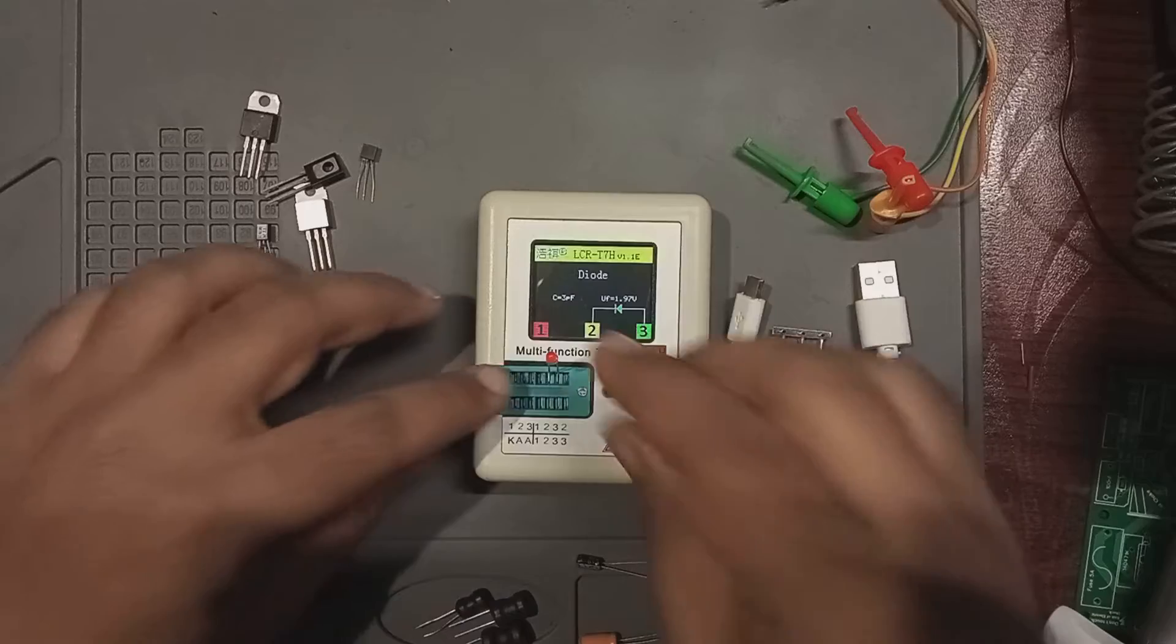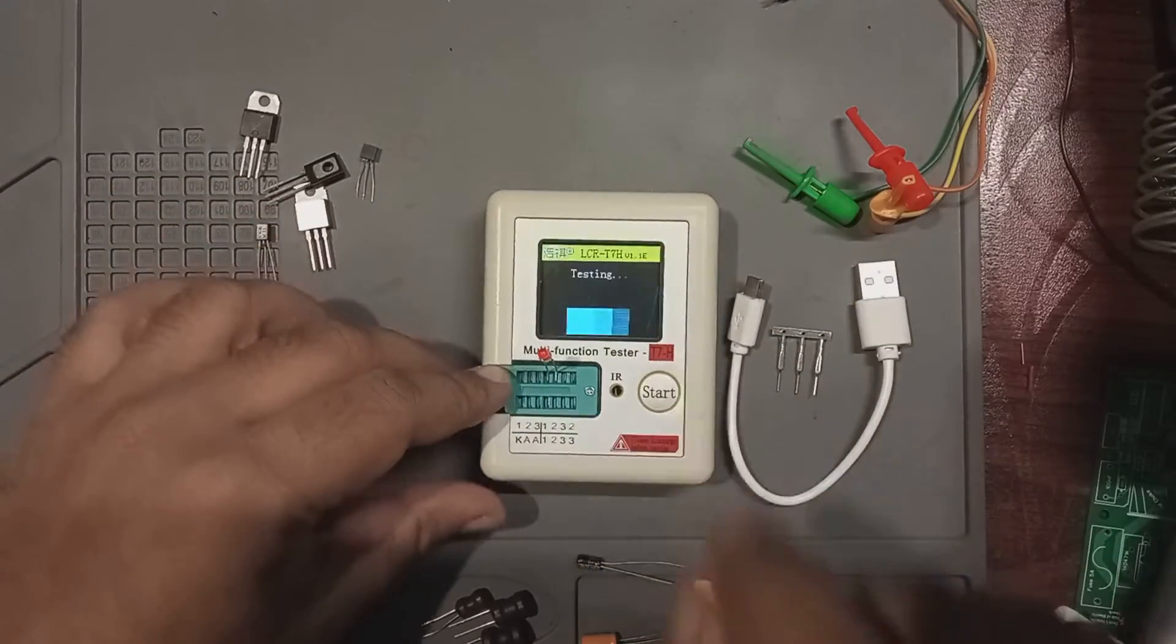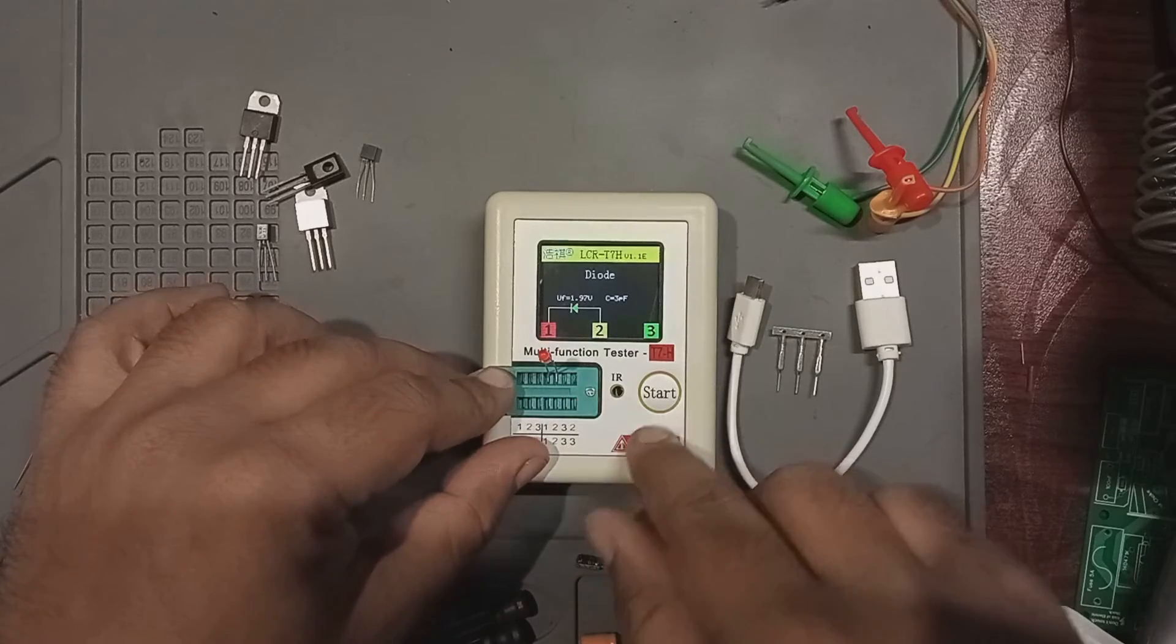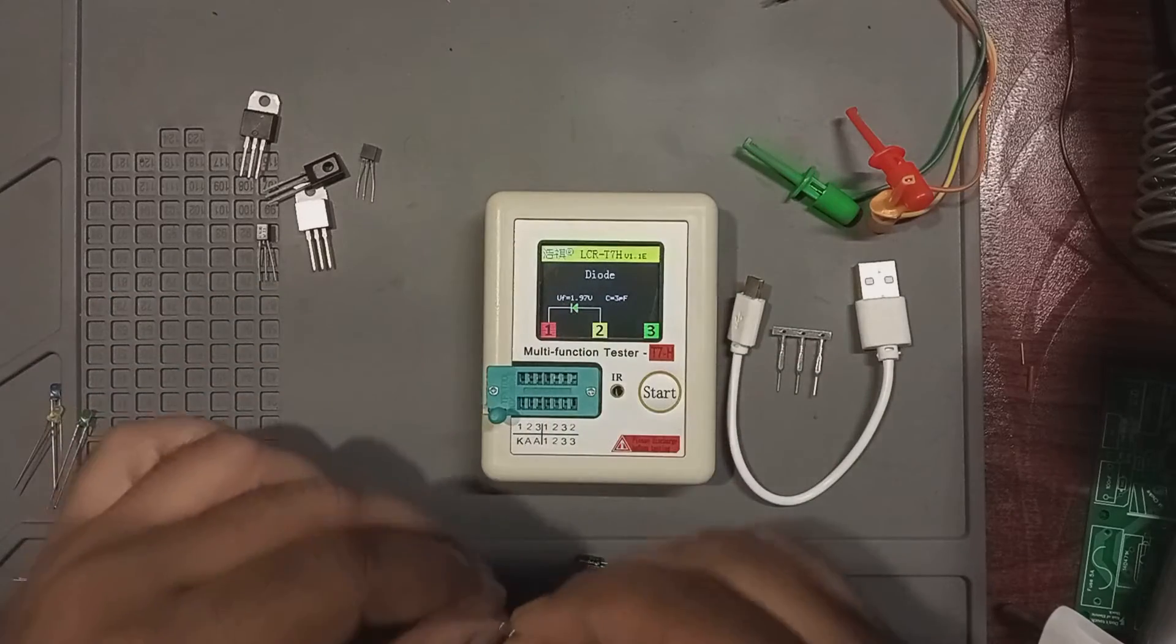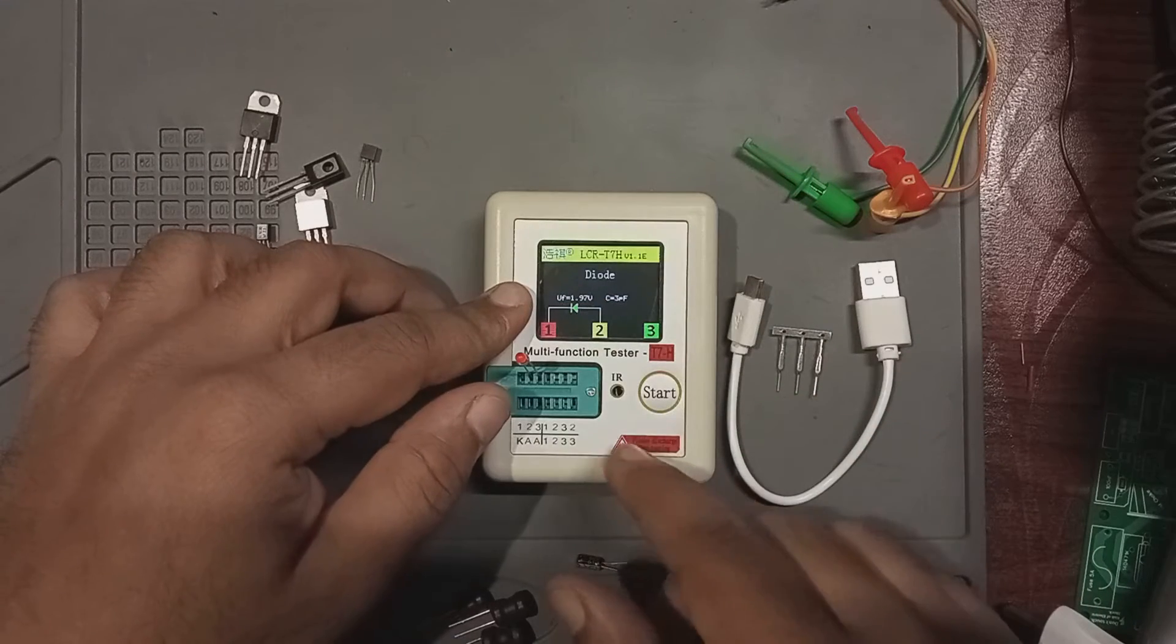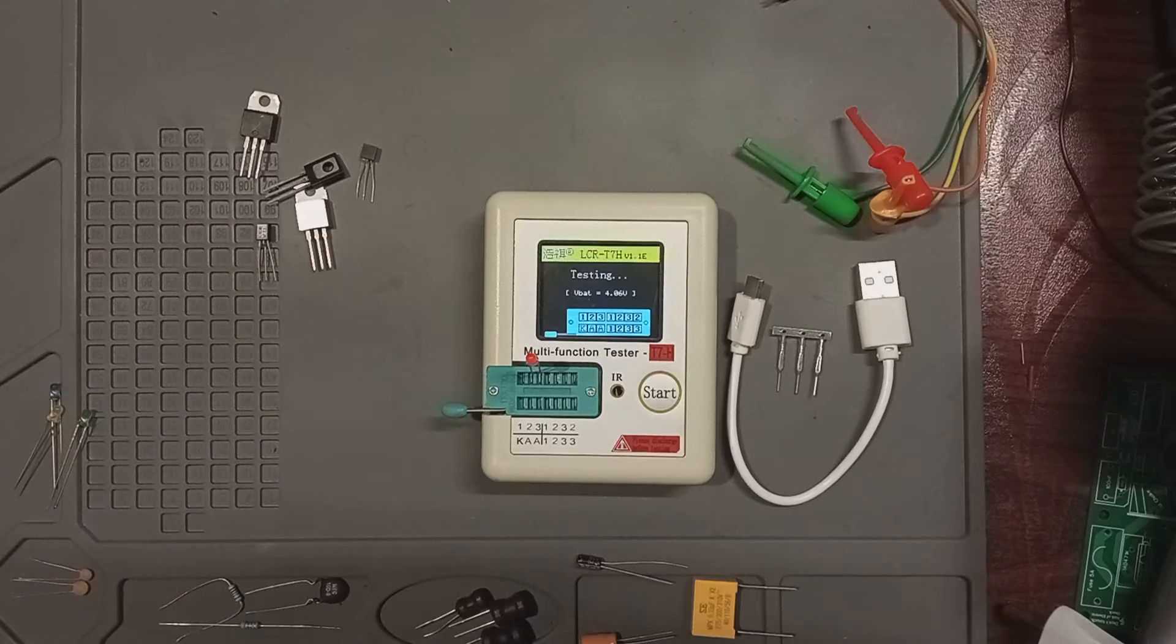It checks in both polarity as we have seen with our scope. Now let's change the pins again and connect to pins we have measured transistors before. And we can see that it still works just fine.